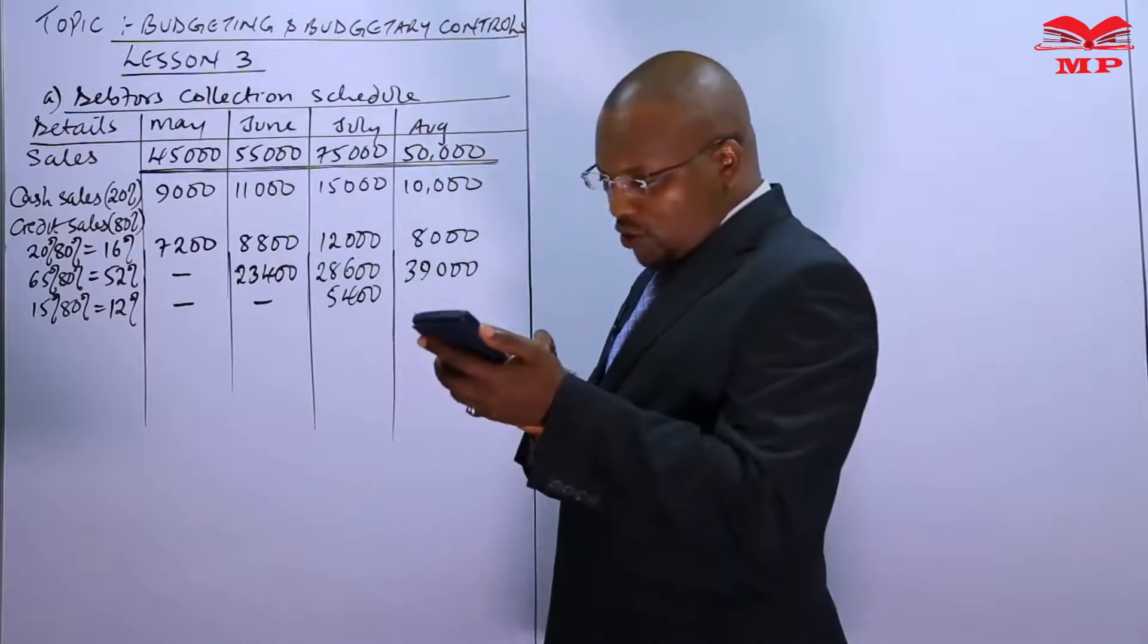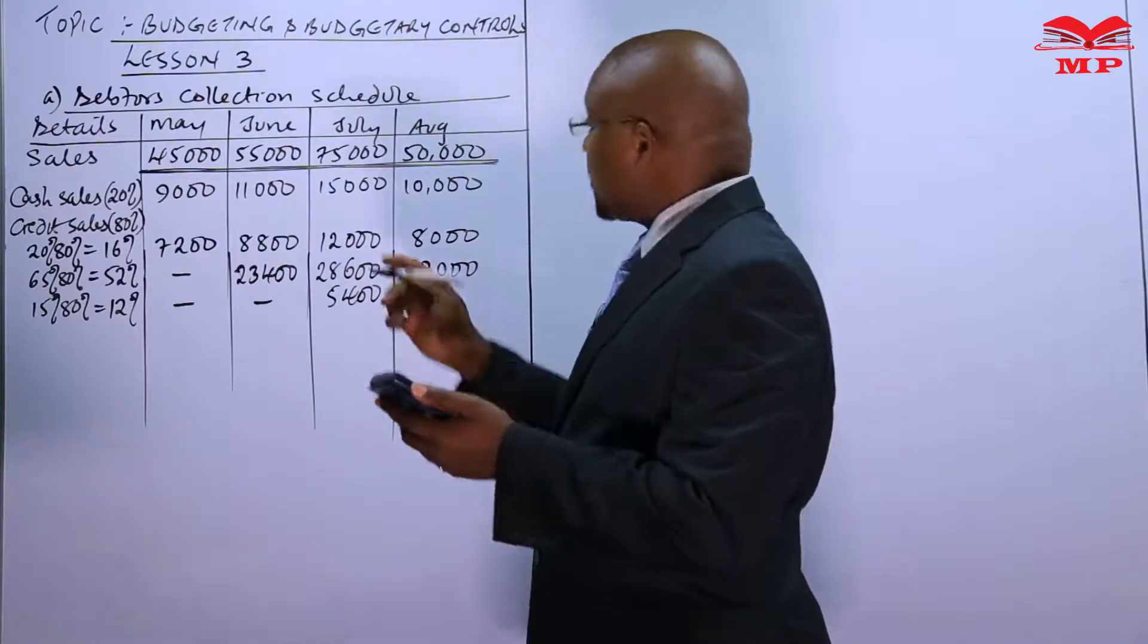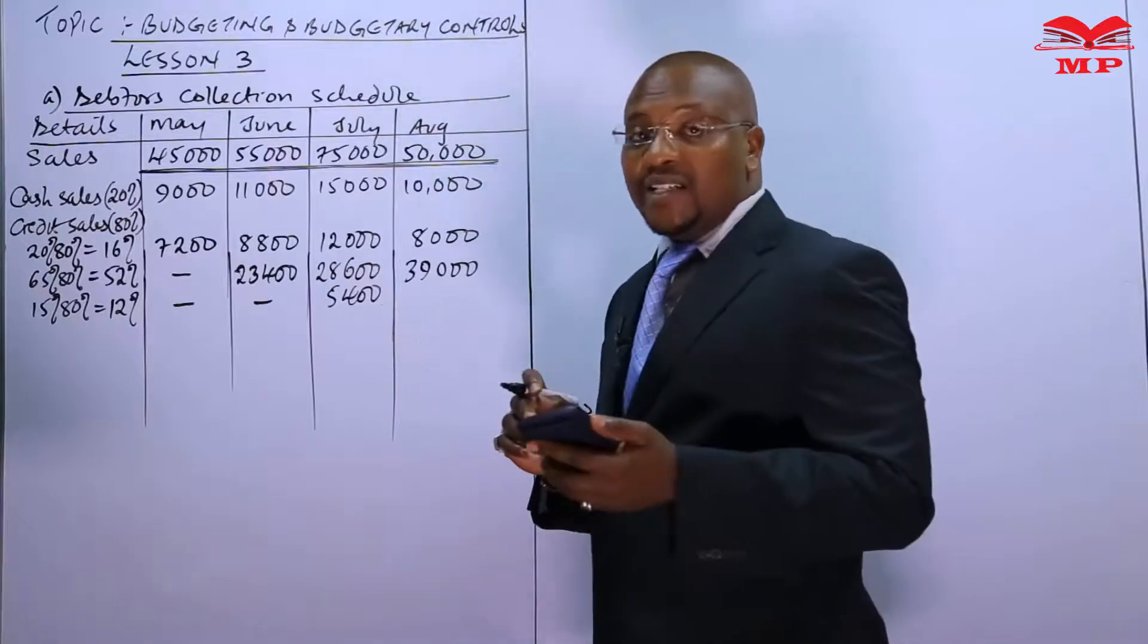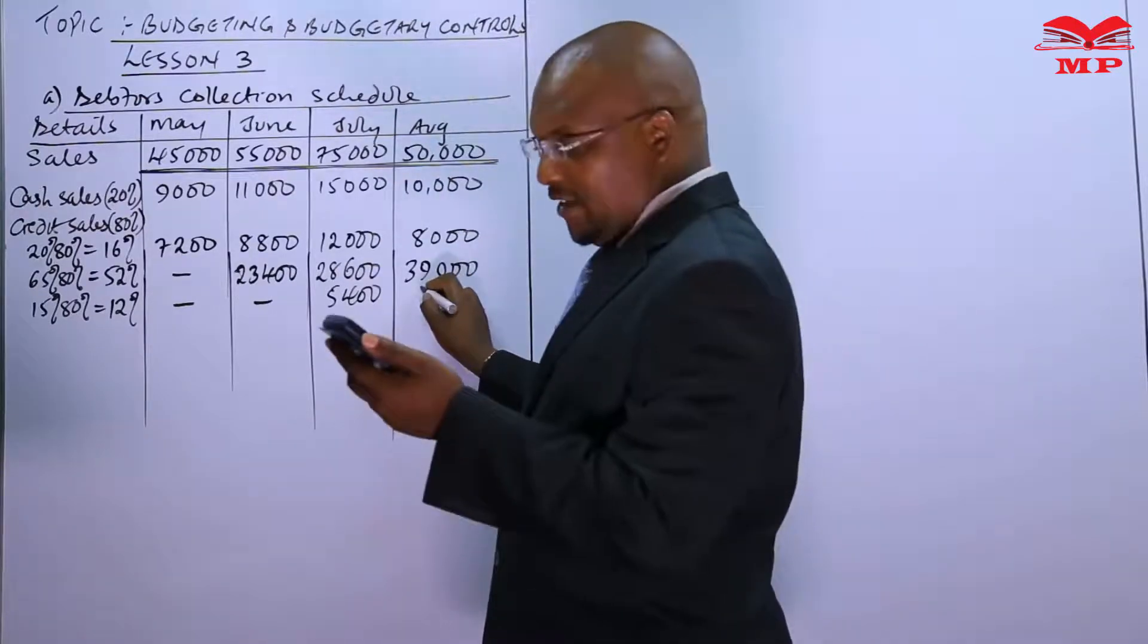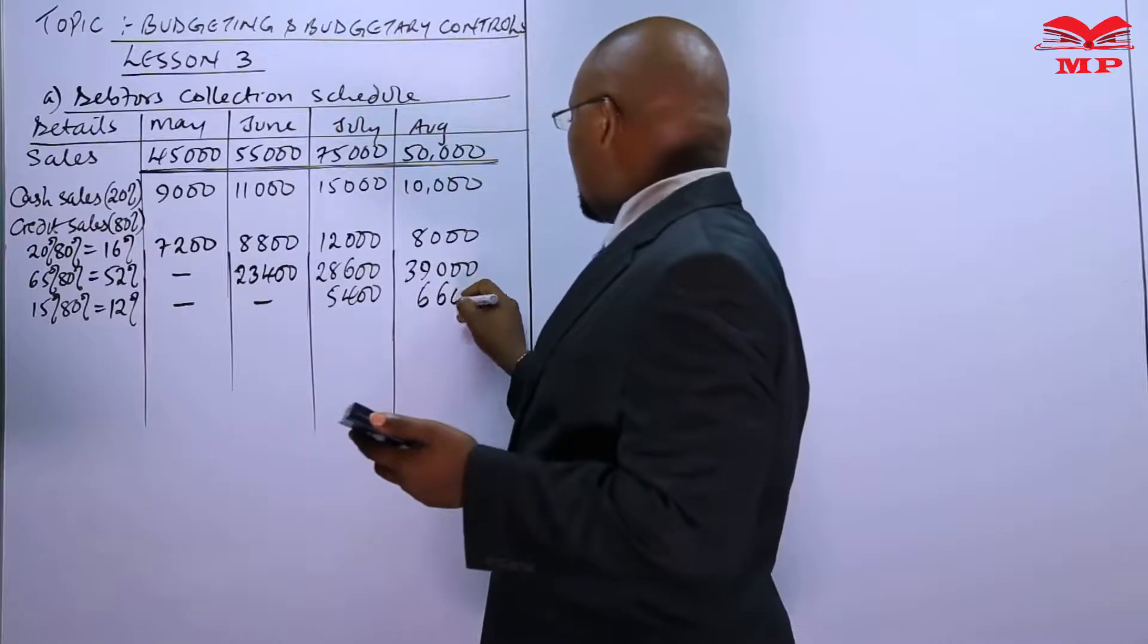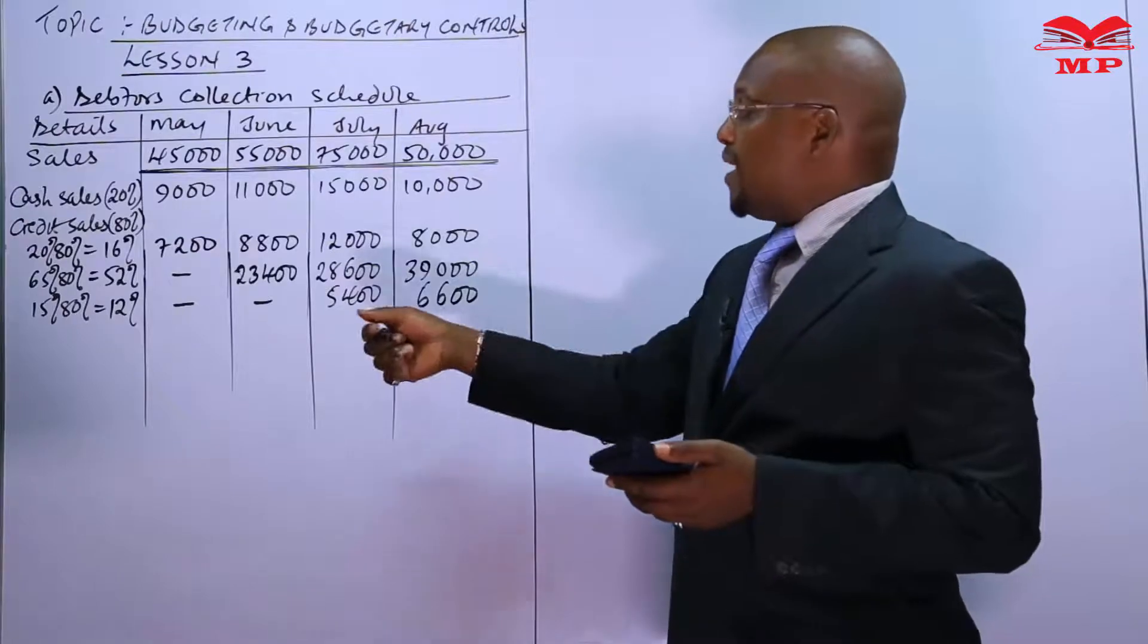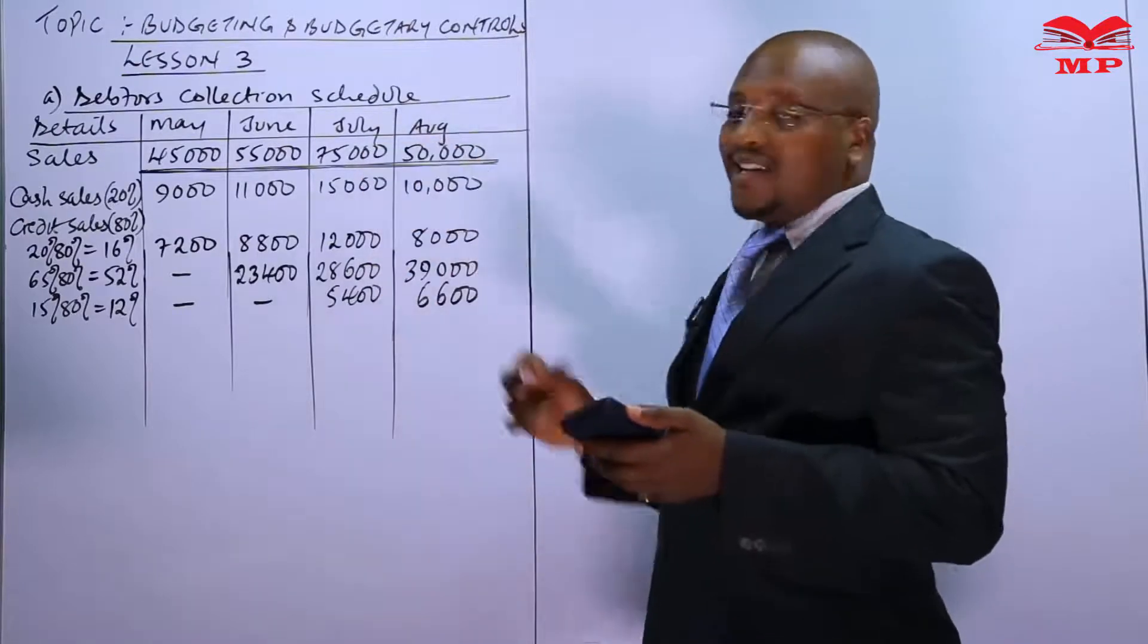The 0.12 times the sales of June which is 55,000, which is 6,600 to be collected two months after which is August, 6,600. Meaning by the end of August we will not have collected the 12% of July and August.